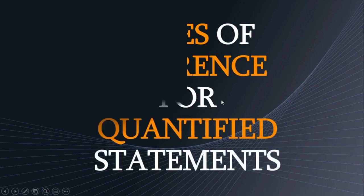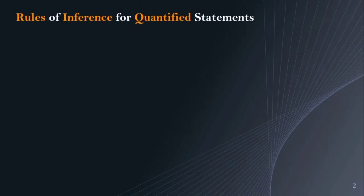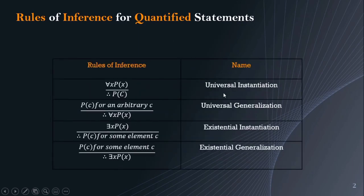Hello, everyone. My topic is all about the rules of inference for quantified statements. These are the following rules of inference for quantified statements: first, we have universal instantiation; next, universal generalization; next, existential instantiation and existential generalization.